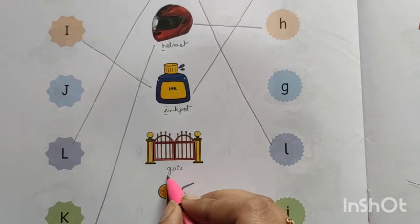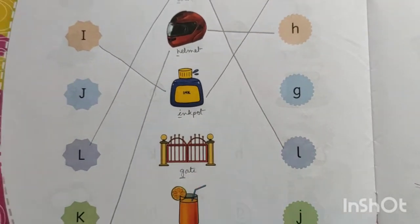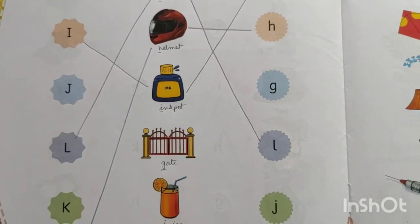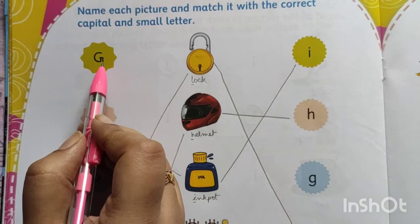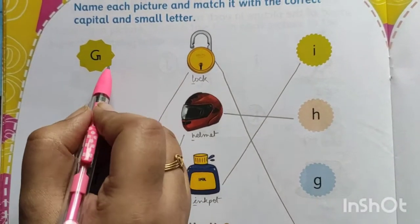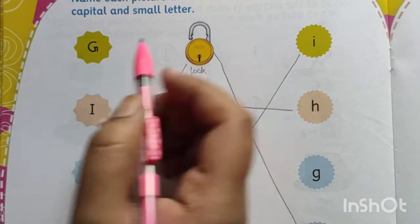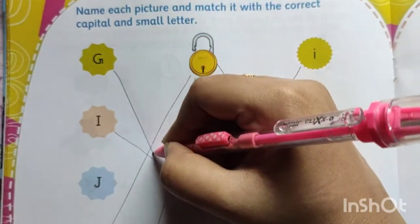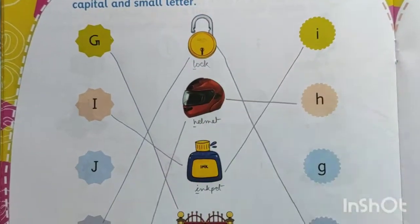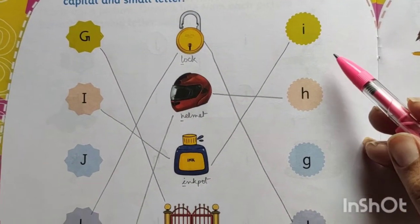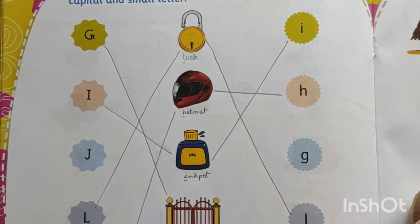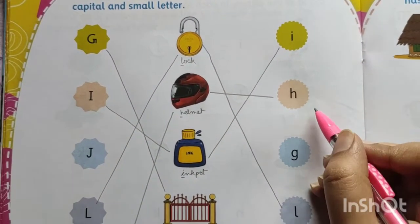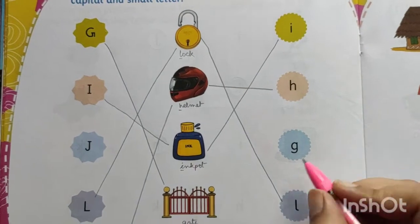Next, this is gate. Starting letter G. So find out where is capital G — yes, this is capital G, first one. So draw the line. And right side you find out where is small G: I-H-G.